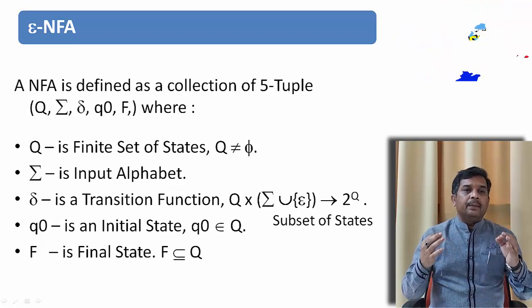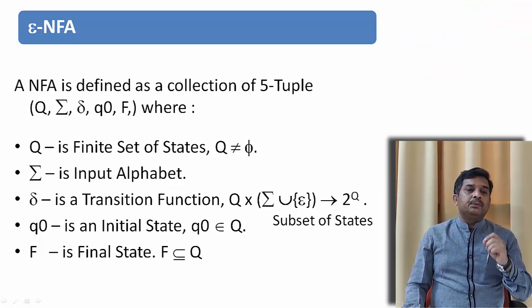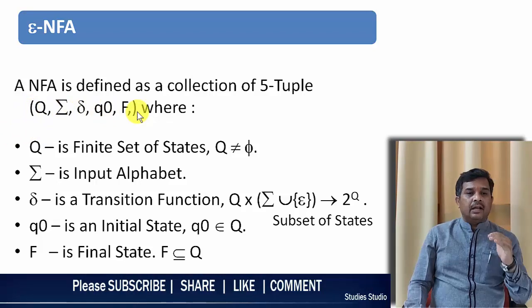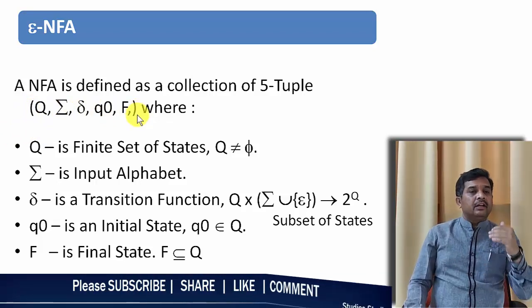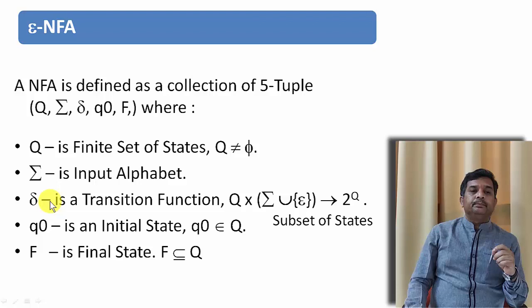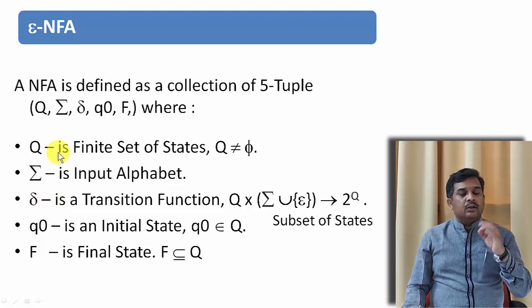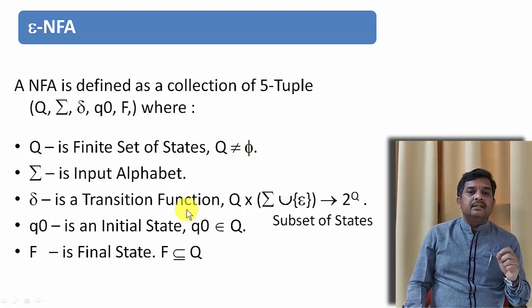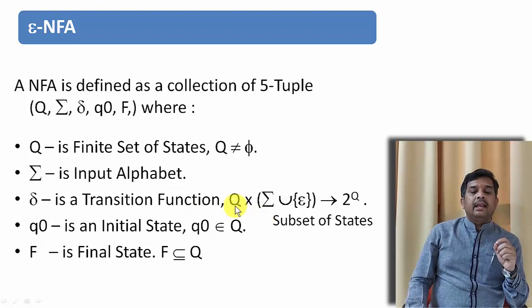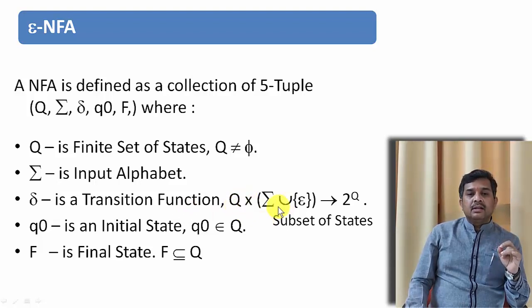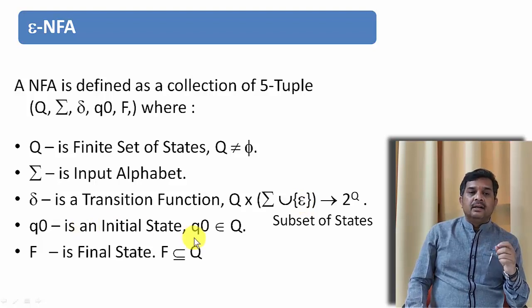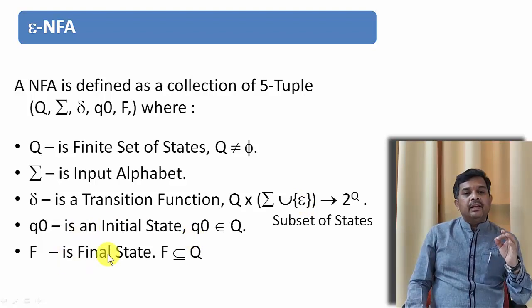Let us define epsilon-NFA. Like any NFA, epsilon-NFA also requires the 5-tuple: Q, Sigma, Delta, Q0, and F to represent. But the difference here is in Delta. When we are saying about Q, it is a finite set of states and it need not be 5. Sigma is the input alphabets and Delta is the transition function. In NFA basically, it is Q cross Sigma to 2 to the power Q. But along with Sigma, we are including epsilon here. As usual, Q0 is the initial state and F is the final state.